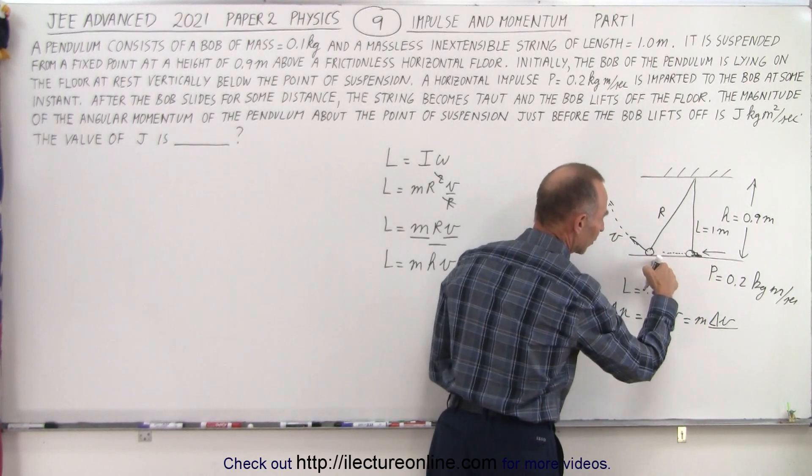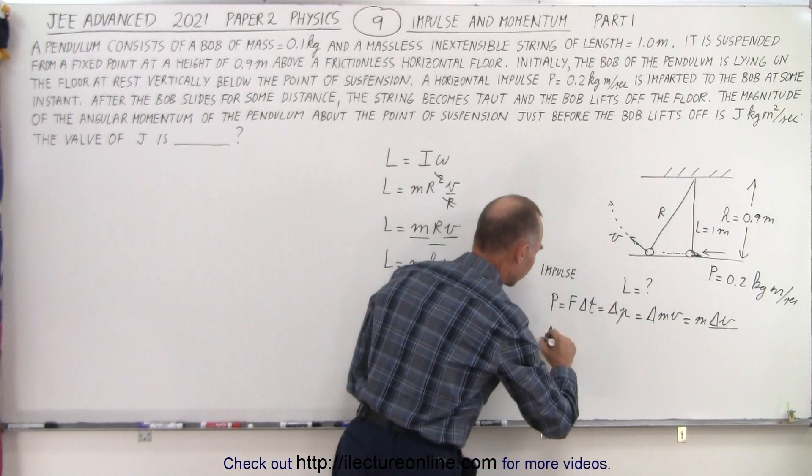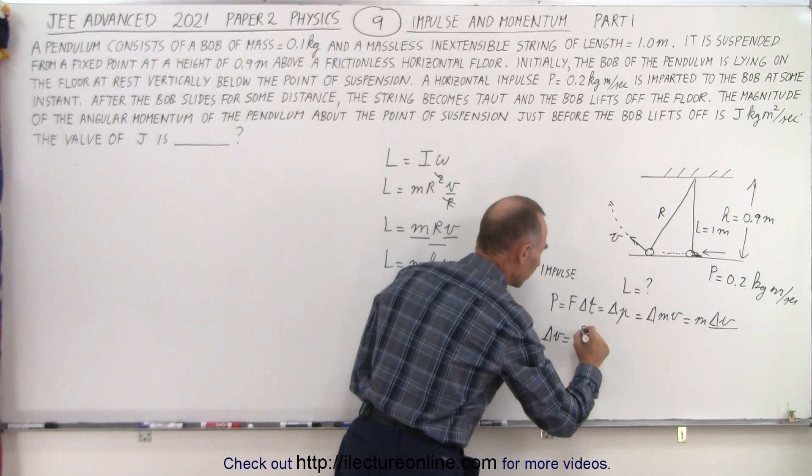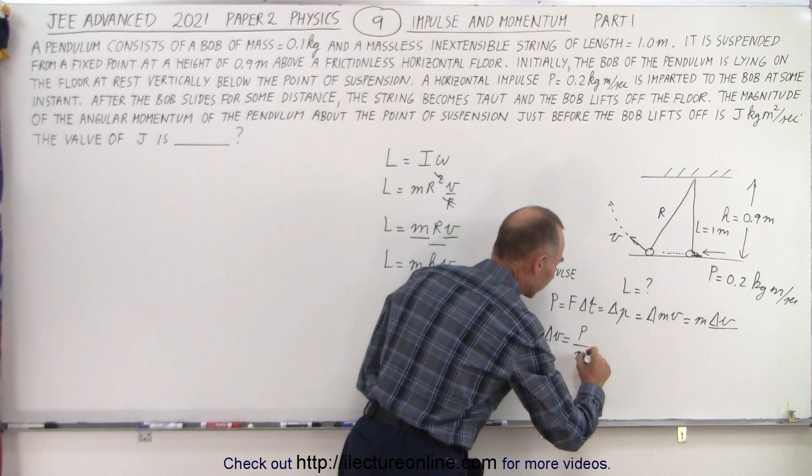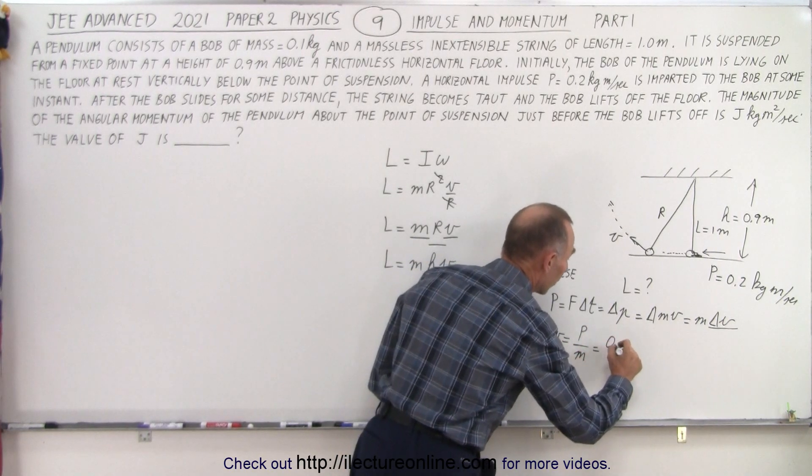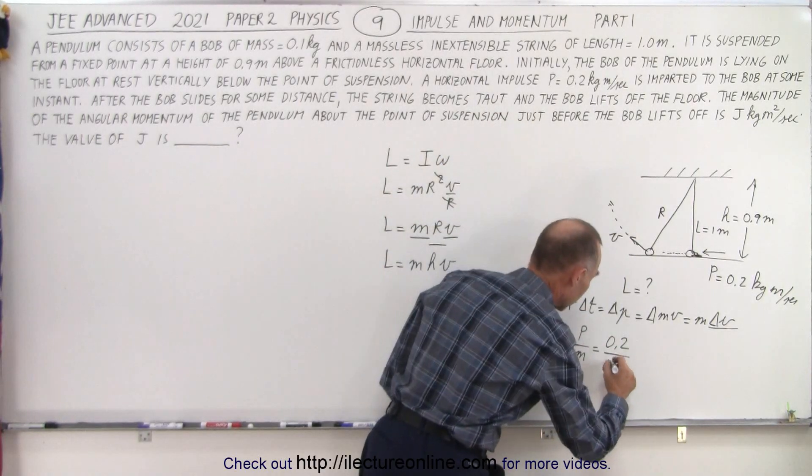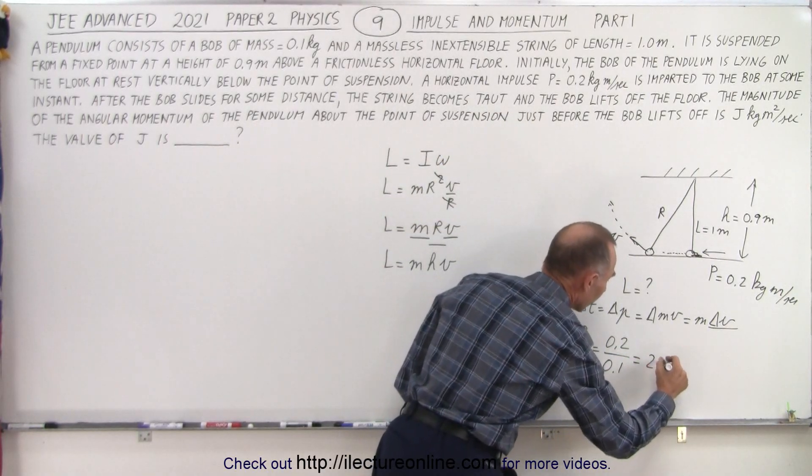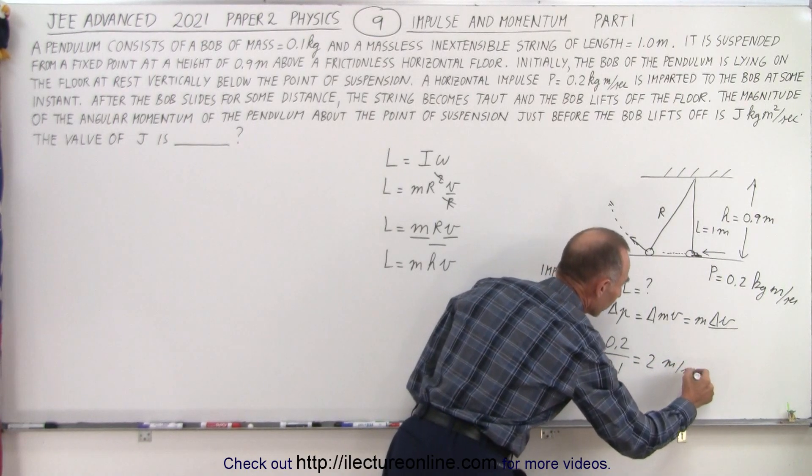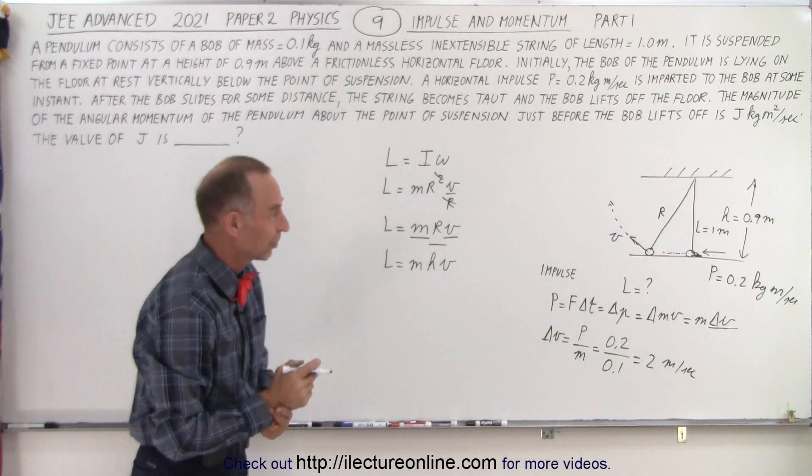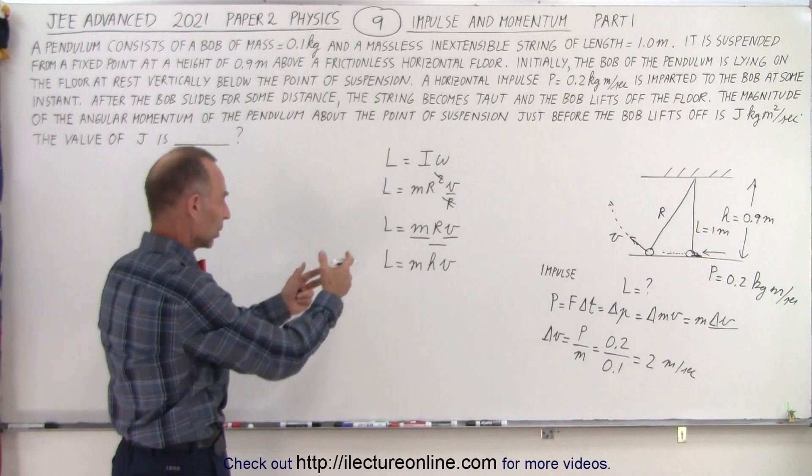The change in v is what we're looking for because it was zero here and it's non-zero over here. That means delta v is going to be equal to the impulse P divided by the mass. The impulse is 0.2 and the mass is 0.1 which means the velocity is 2 meters per second after the impulse hits the bob. Now we can plug all that in.